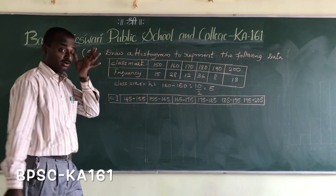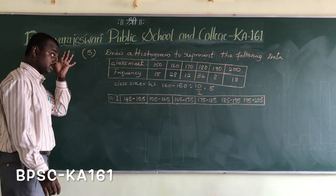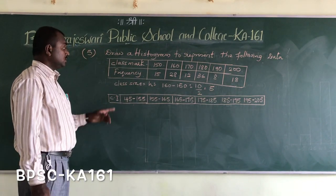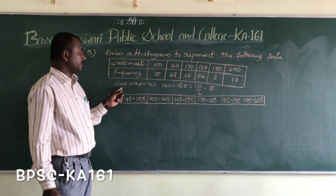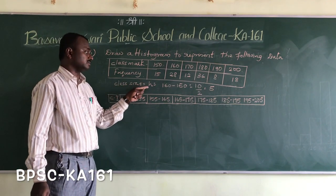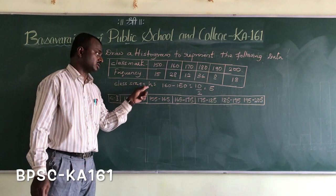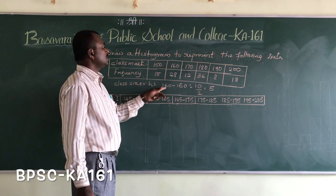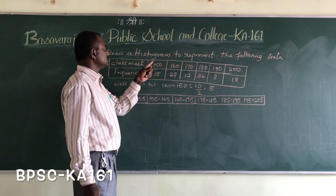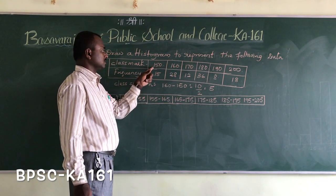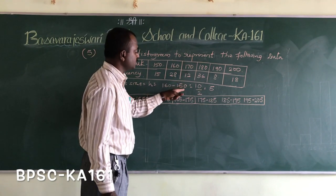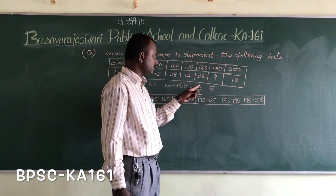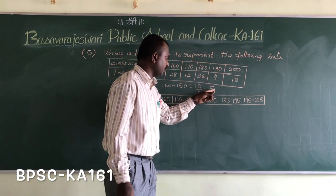Let me once again explain how to find out the class interval when the class mark is given. The first step is to find the class size h. The formula for h is: difference between two successive class marks — that is 160 minus 150, which equals 10 — then divide it by 2, giving 5.